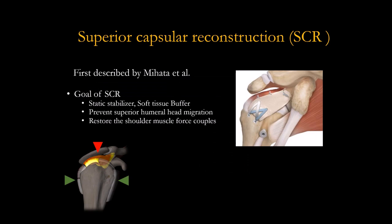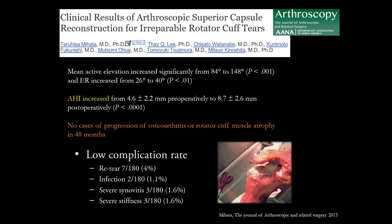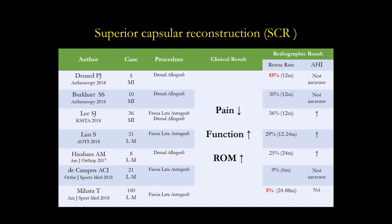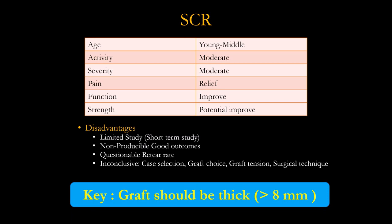Another option is superior capsular reconstruction (SCR), proposed by Teru Mihata — he's my good friend. His concept is to create a static stabilizer preventing superior migration, acting as a soft tissue buffer on the footprint. The result is very good — he changed the concept of cuff repair. Increased acromiohumeral interval, 90% patient satisfaction, complication rate only single digits, better pain relief, function, and range of motion.